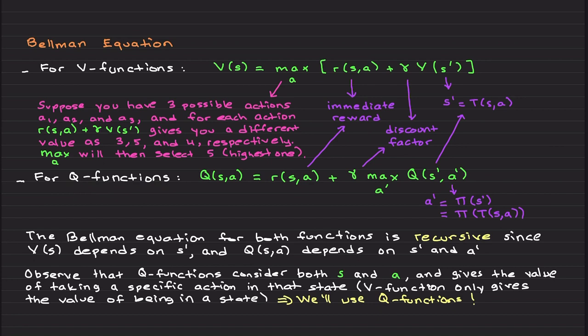So here is a Q function. It depends on immediate reward, it also has the discount factor, and it basically maximizes the next value of a' and this Q depends on s' here and a'.